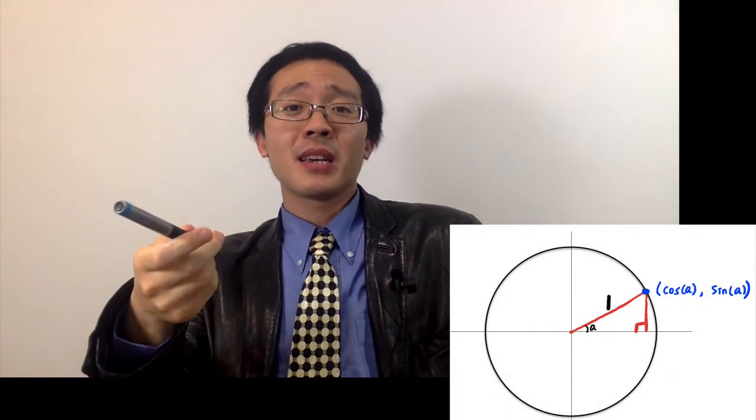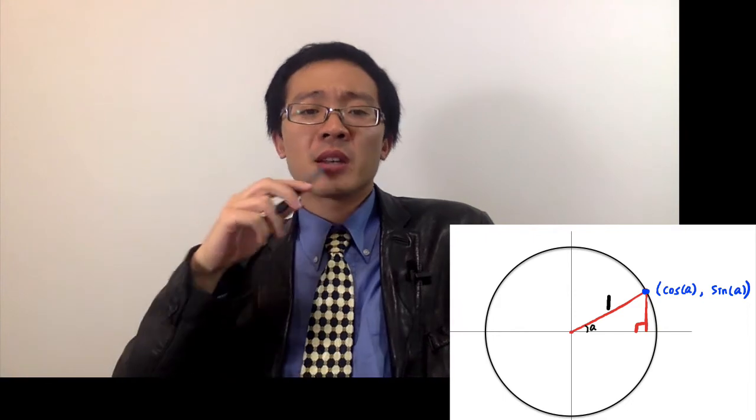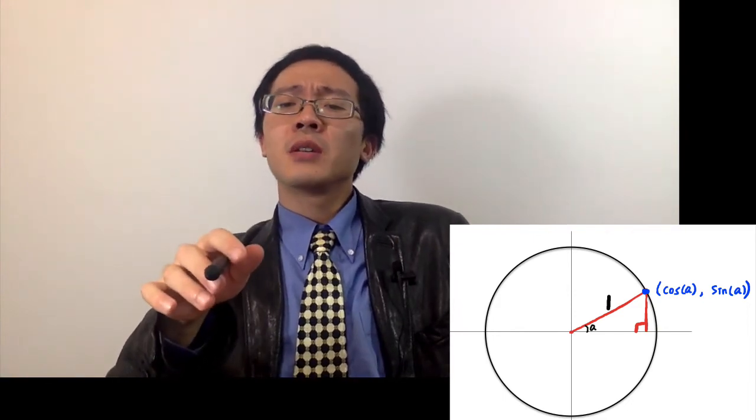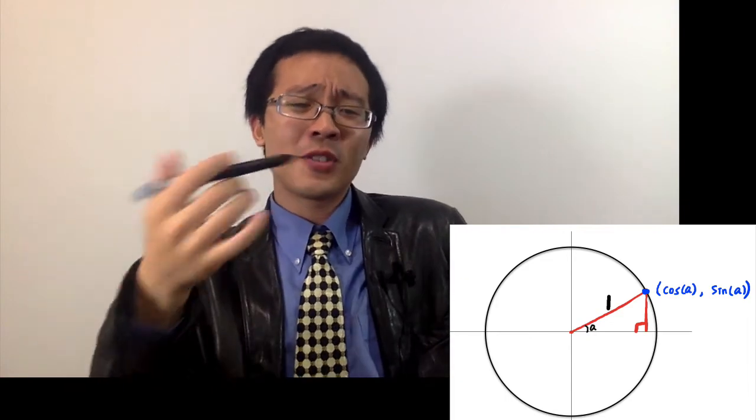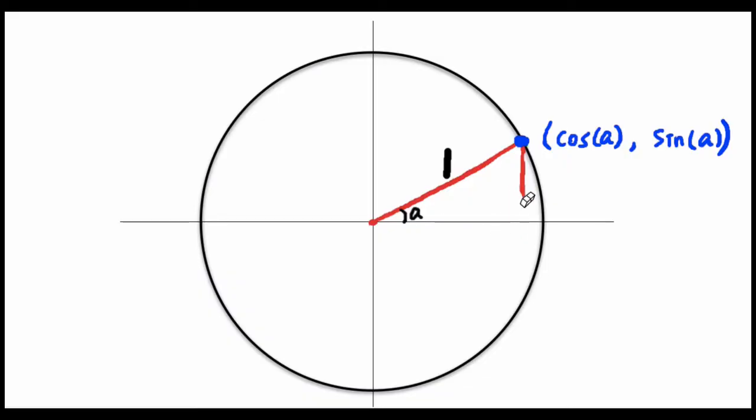So we added an xy plane, we added a circle, but seriously, nothing's new so far. Except when you realize, do we still need that right triangle there? Sorry my dear, we loved you, but you will not need it anymore. What I mean is that we can just define our sine and cosine to be the coordinates of this point on the circle.